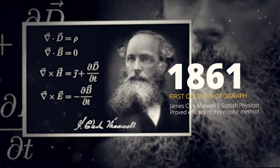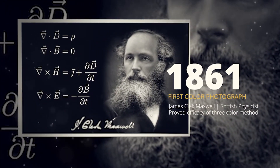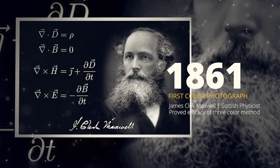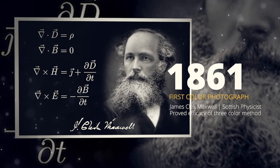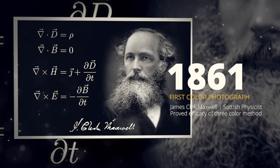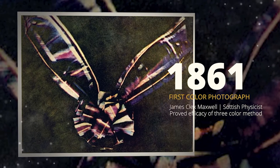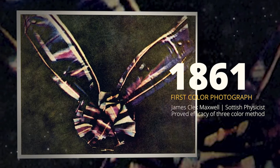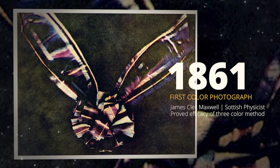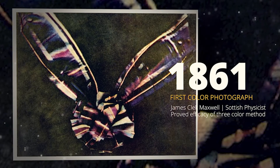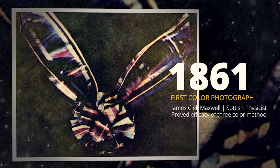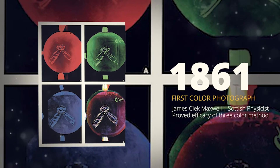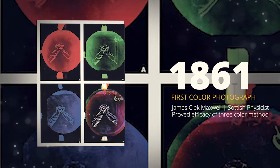In 1861, the first color photo was created by the Scottish physicist James Clerk Maxwell. He superimposed three black and white images onto the same surface, and had each image pass through a colored filter — one for green, one for red, and one for blue. In doing so, he proved the theory of the three-color method.